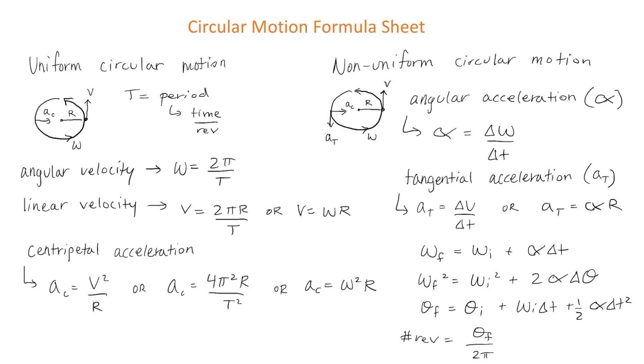Angular acceleration, tangential acceleration, and centripetal acceleration. Angular acceleration is equal to the change in the angular velocity divided by the change in time. Tangential acceleration is perpendicular to the centripetal acceleration and it is equal to the change in the linear velocity divided by the change in time. Or you can find the tangential acceleration using a equals the angular acceleration times the radius.